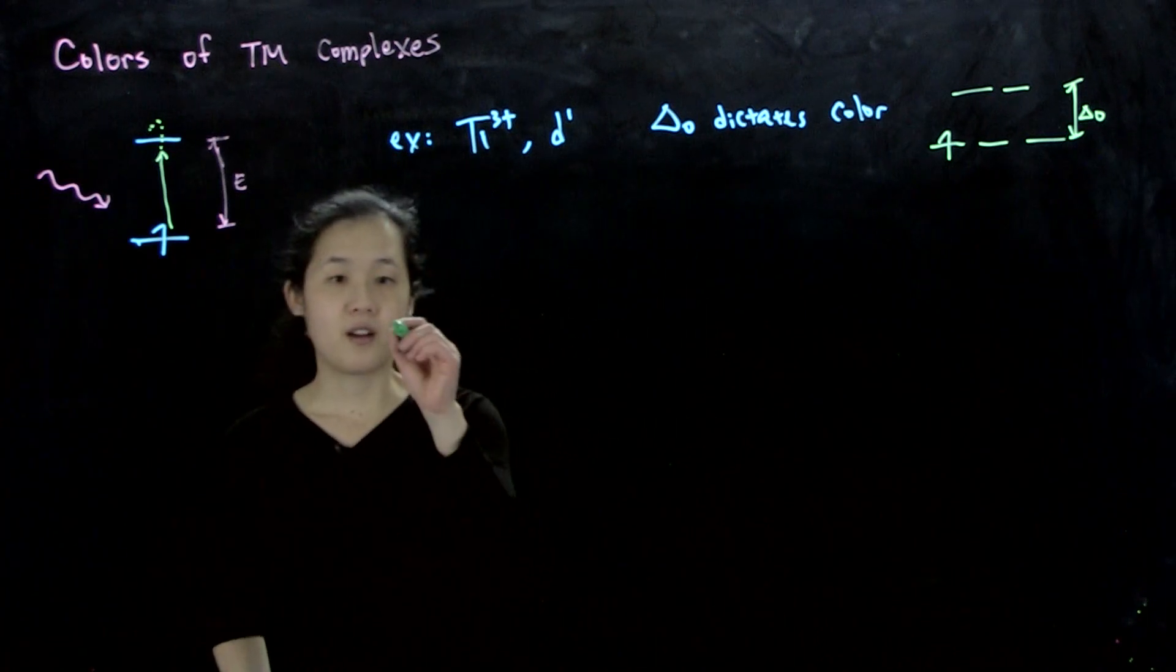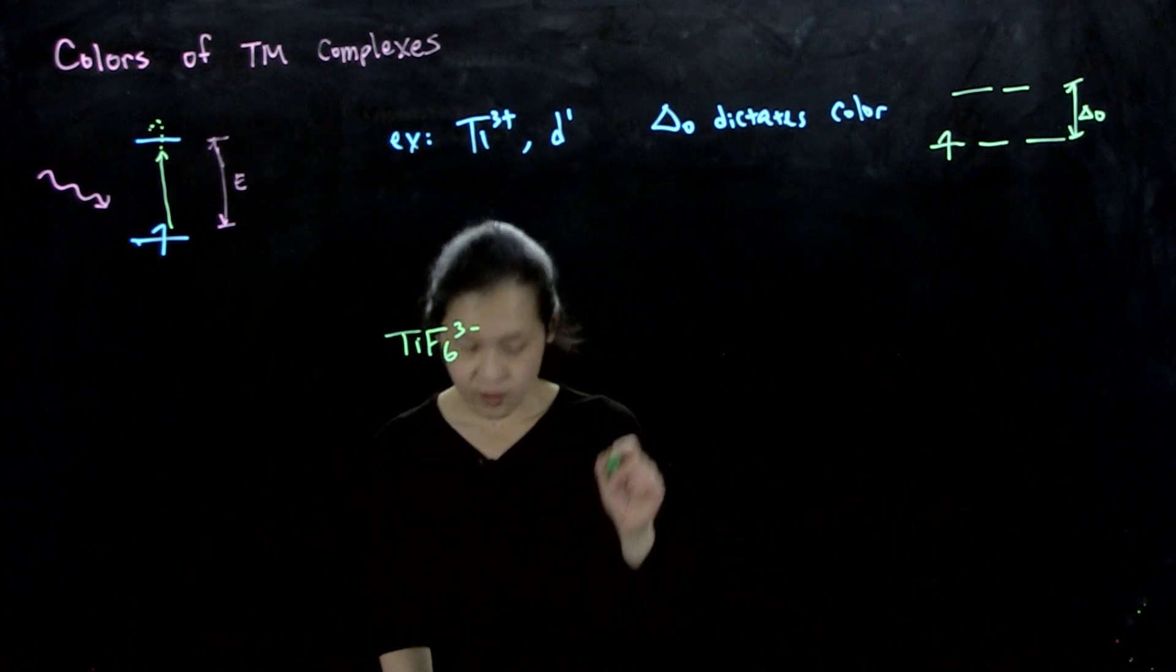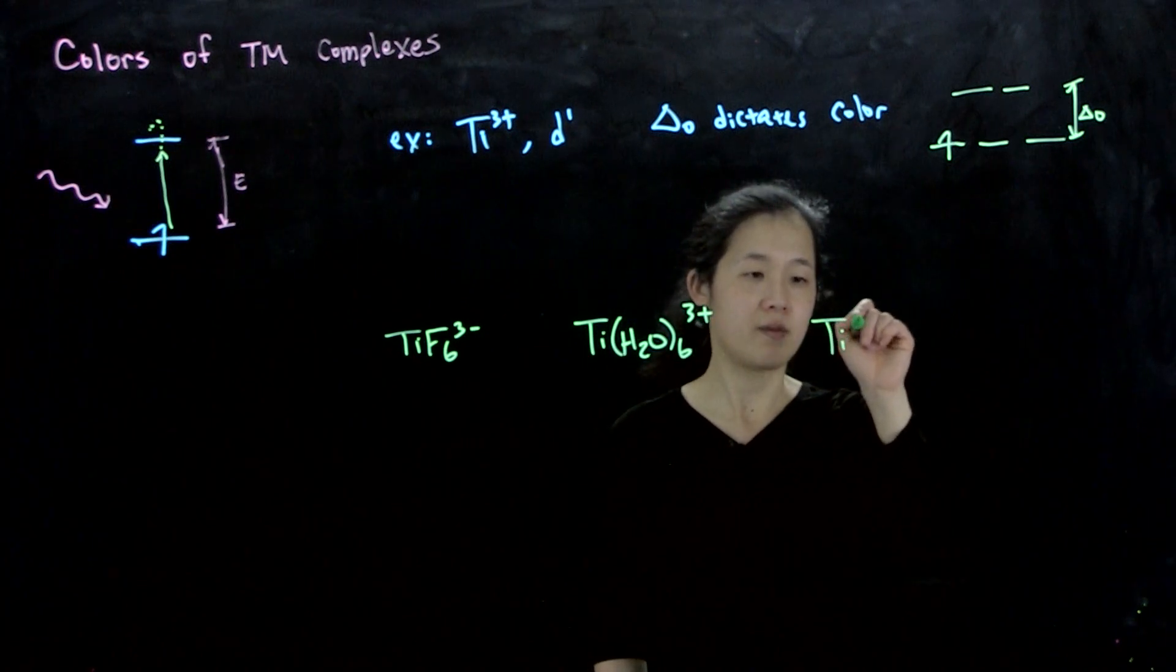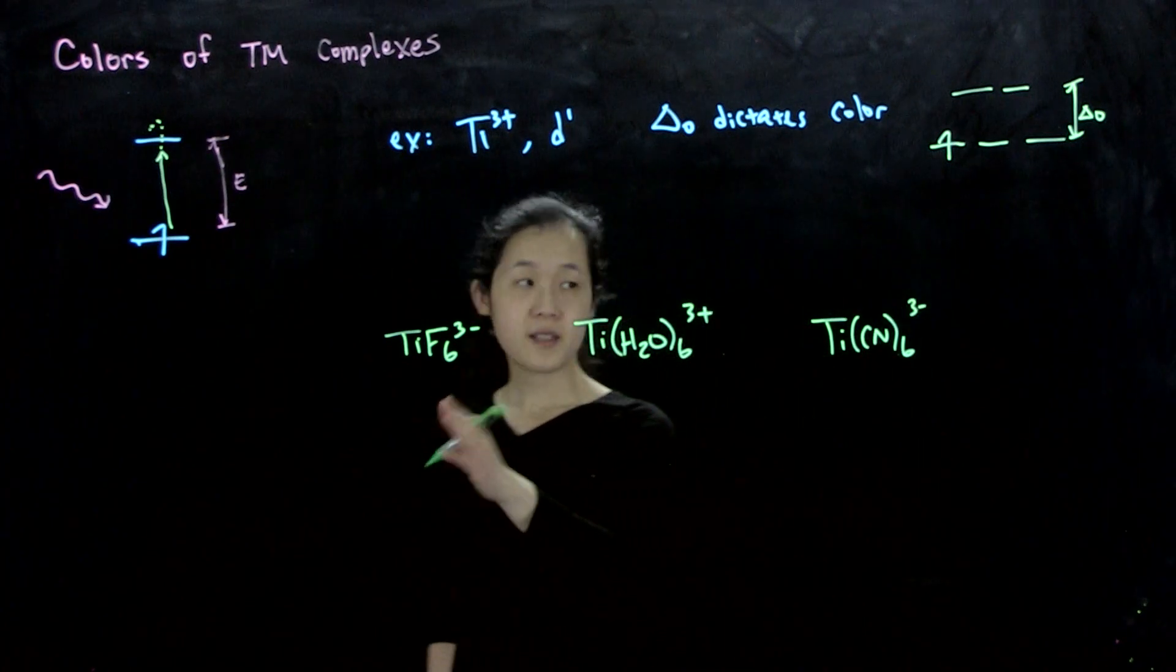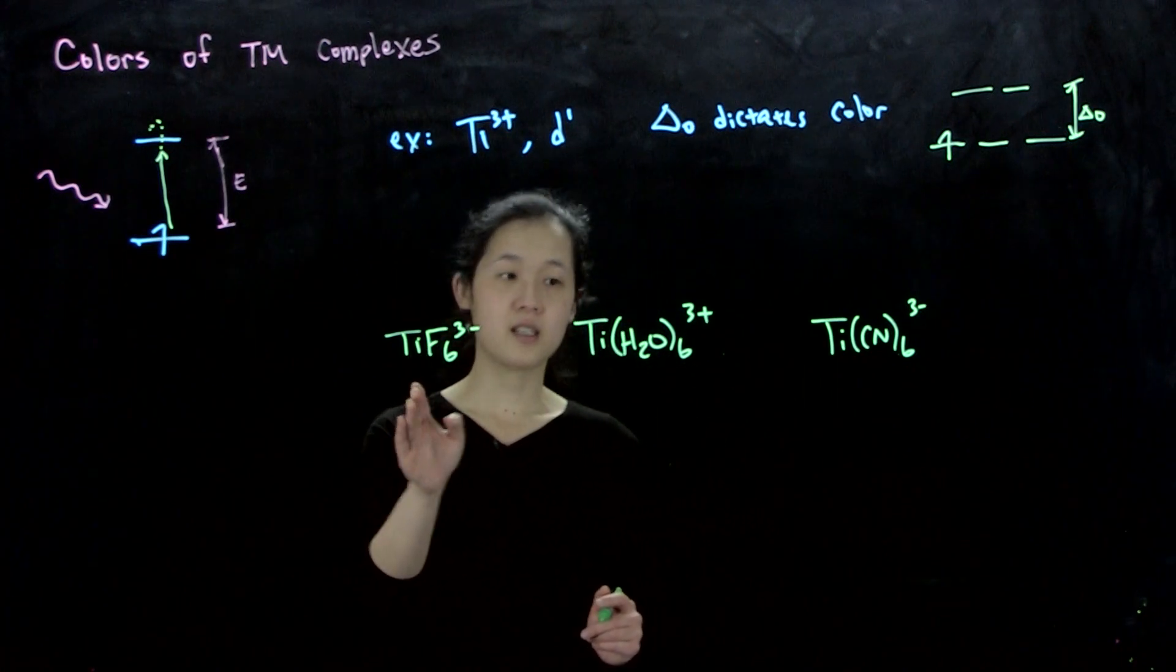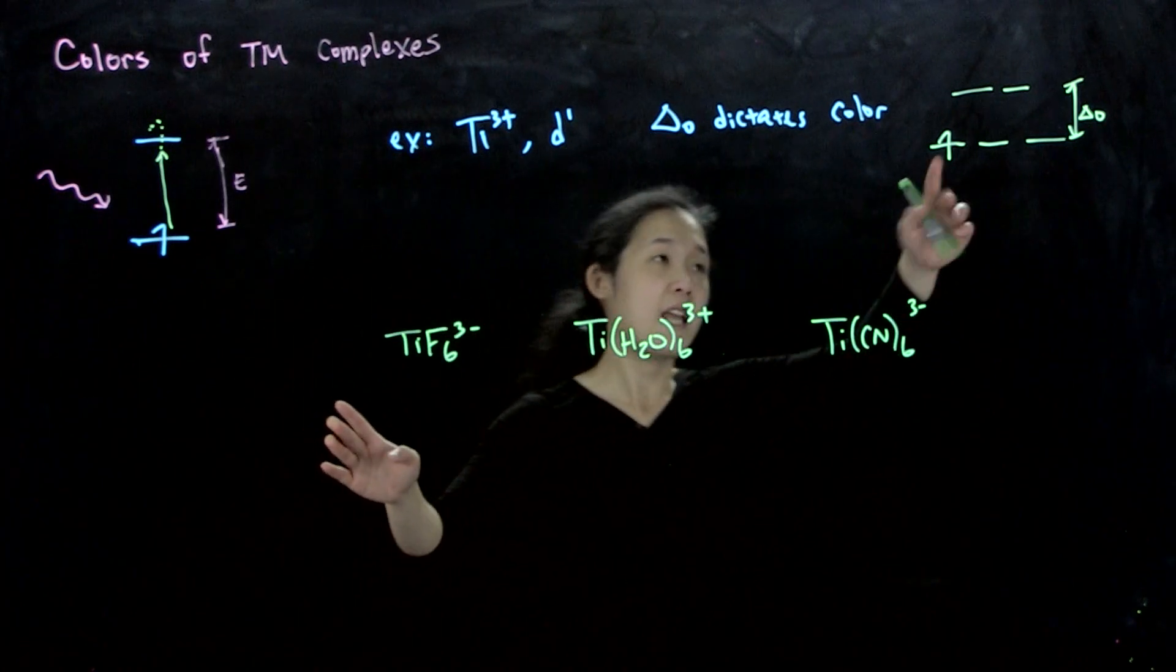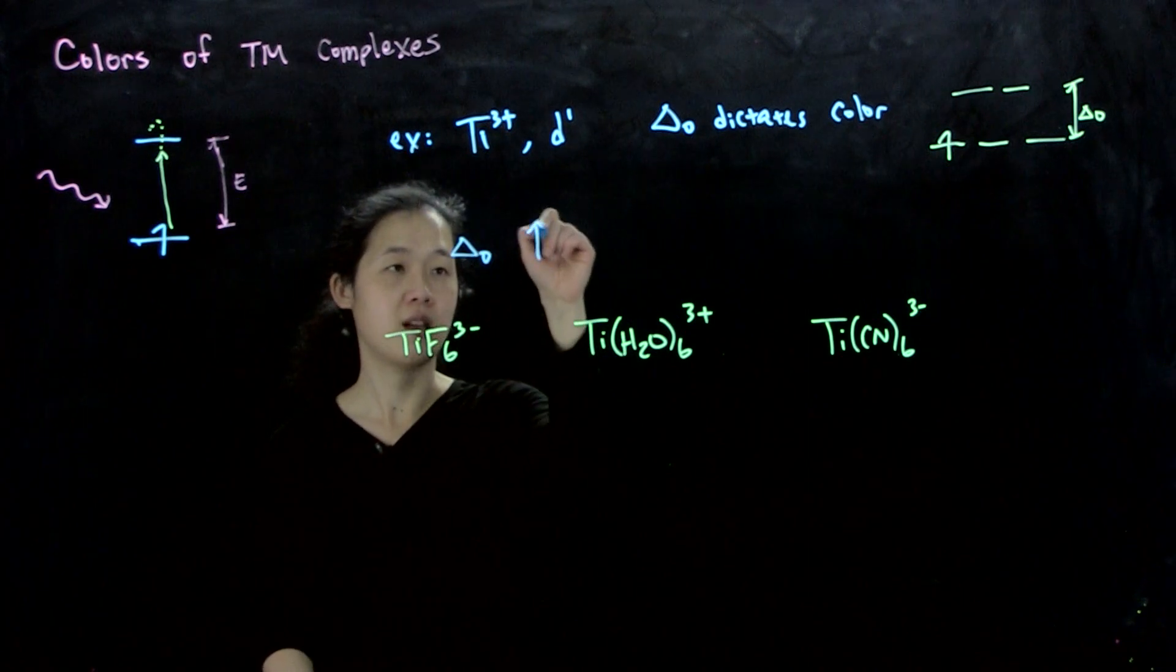So if we go from titanium hexafluoride to titanium hexa-aqua, and then maybe hexacyanotitanium 3 minus, we've changed our ligands, and you can see I've ordered it going across the spectrochemical series. Fluorine is a pi donor, it's a weak field ligand. Water is sigma only. Cyanide is a pi acceptor, so this is a strong field ligand. As a result, even though our configuration is the same, our delta O increases going across.